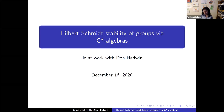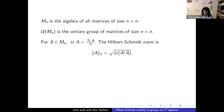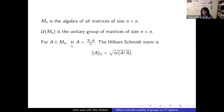My talk will be mostly based on works with Don Hadwin. I will start with the definition. We consider the algebra of all matrices of size n by n, and for a matrix of size n by n, let's consider its normalized trace — that's the usual trace divided by n. The Hilbert-Schmidt norm is defined as the square root of the normalized trace of a* a.